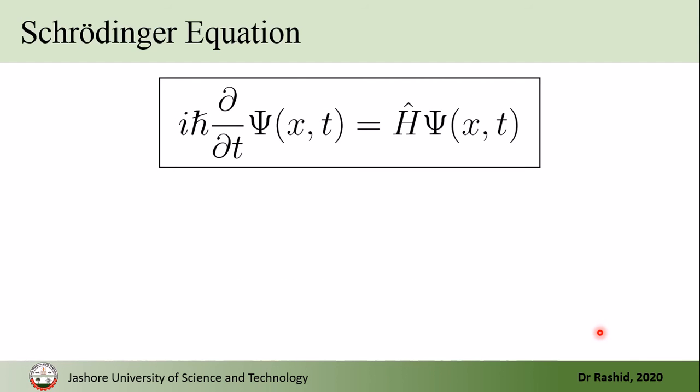We start by recalling the Schrödinger equation. In quantum mechanics, the system is described by the wave function, usually written with the notation psi. Psi satisfies the Schrödinger equation — that is, by solving the Schrödinger equation, we can obtain the wave function.